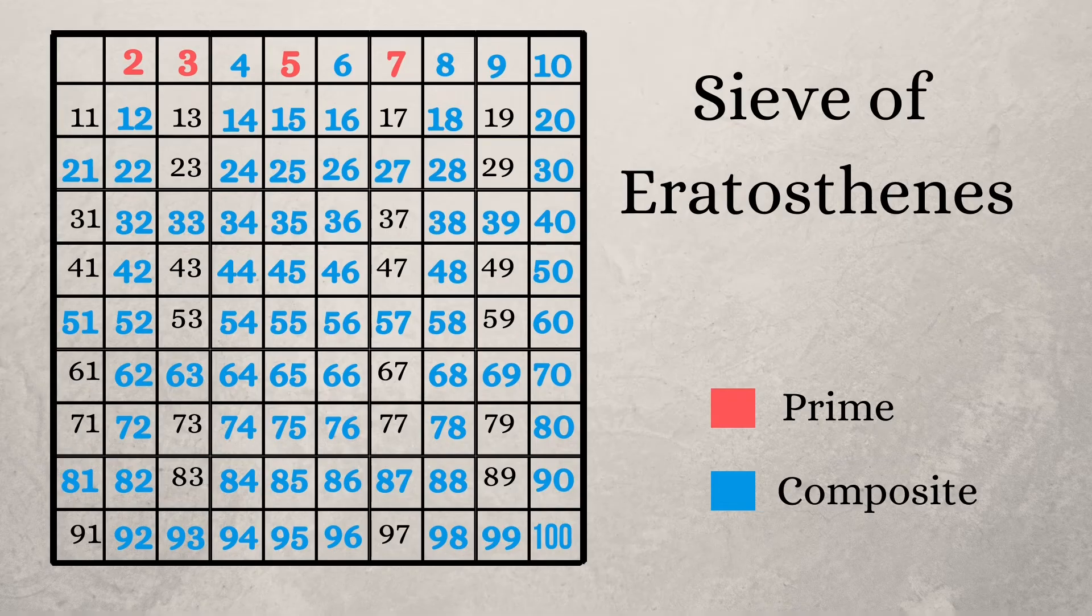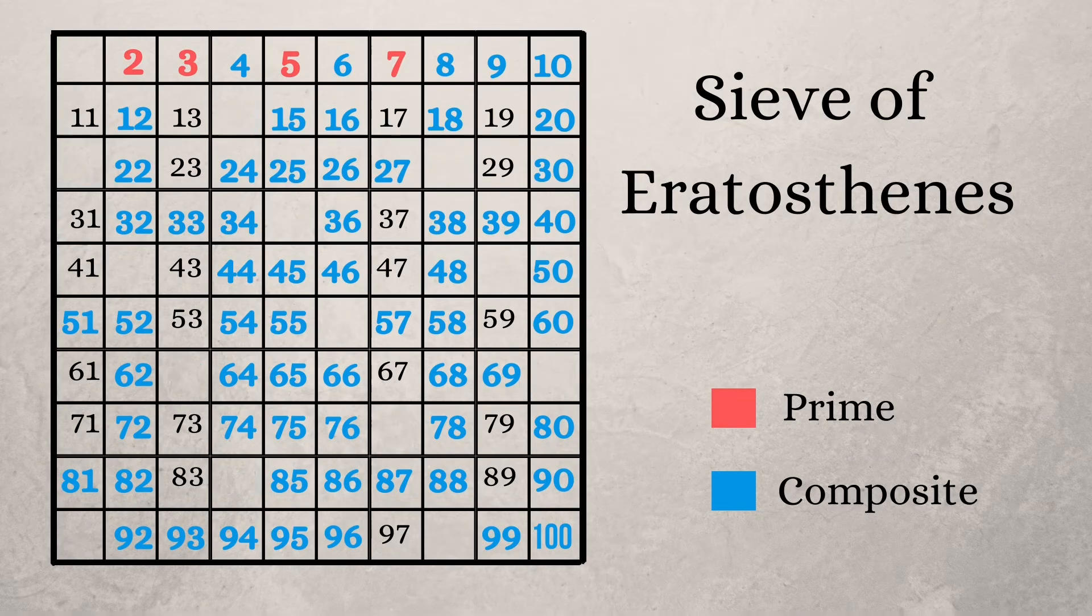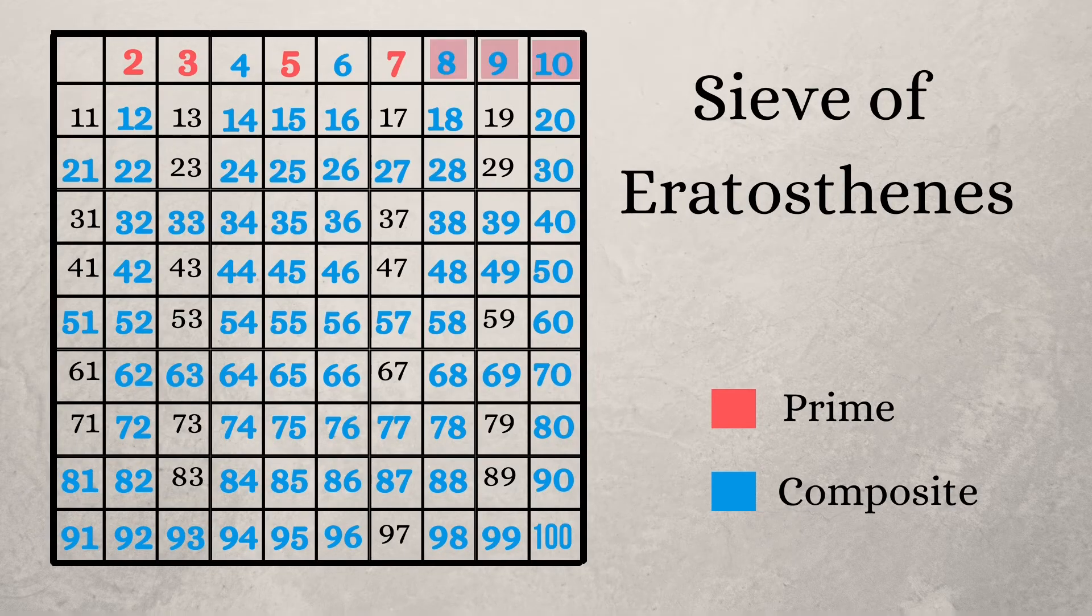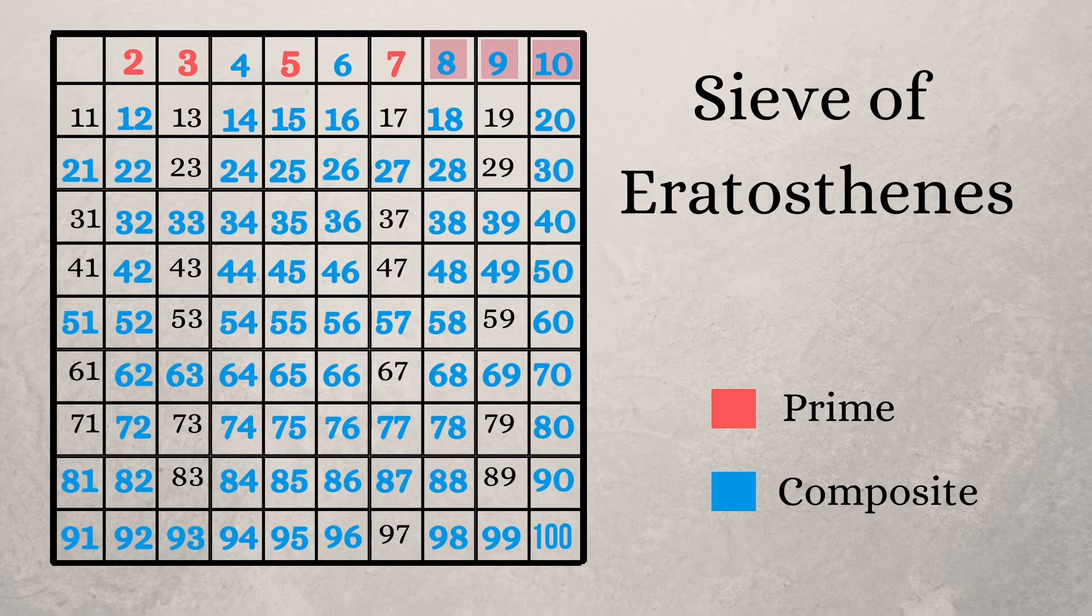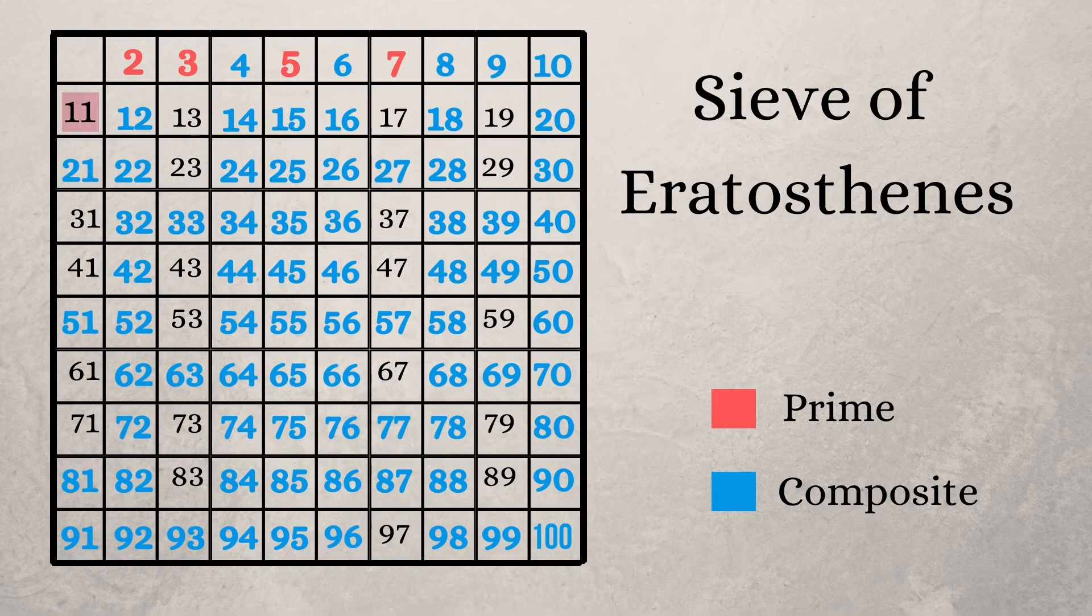Now mark seven as a prime number, and its multiples become composite numbers. The following three numbers are already marked as composite numbers, so happily skip them.